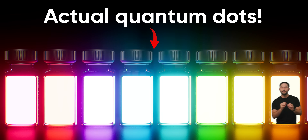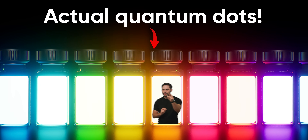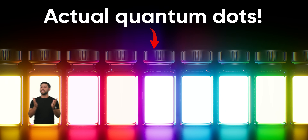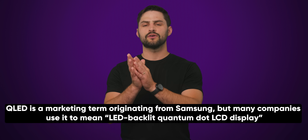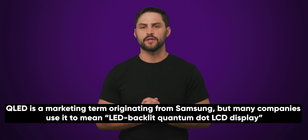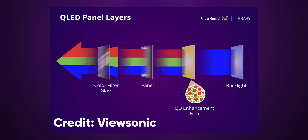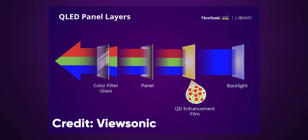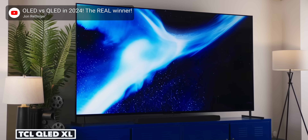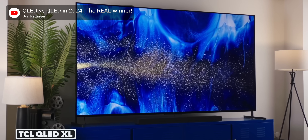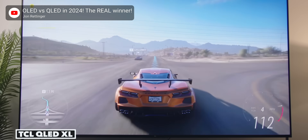A quantum dot works by emitting a pure single color light when another light source hits it. But there are two main types of quantum dot displays on the market right now. The first is the standard QLED, which typically works with a backlight of pure blue LEDs along with red and green quantum dots. These three colors combine to make white, which then goes through a color filter. But this white is composed of purer red, green, and blue than you'd get on a conventional LCD, resulting in deeper, more saturated colors.